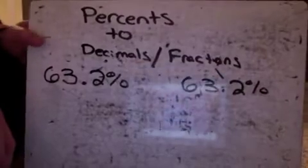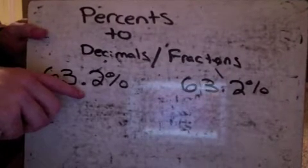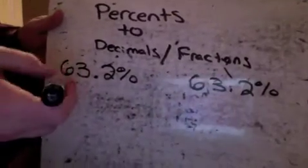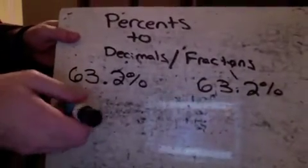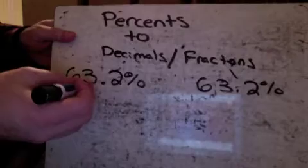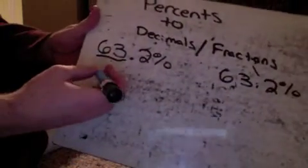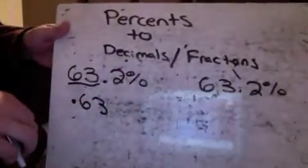All right. Another example here. We've got 63.2%. So again, if we're changing this percentage to a decimal, I just want those first two whole numbers is all I want. So I want these first two whole numbers, 63. So my decimal is going to be 0.63.